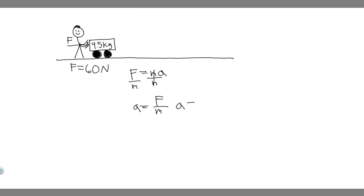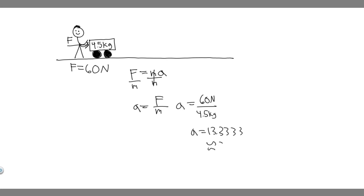So you're going to get A is equal to the force, which is 60 newtons, divided by the mass, which is 4.5 kilograms. So 60 divided by 4.5 gives you A equals 13.333... You can just round to 13.3.